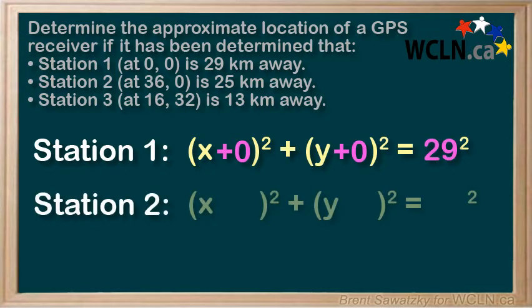Station two, x minus 36 all squared, that is station two is 36 kilometers east of station one, plus y squared, that is there's no shifting of the circle in the north-south direction, and again the distance between this station and the receiver is the circle's radius, so 25 squared.